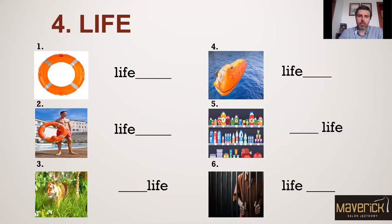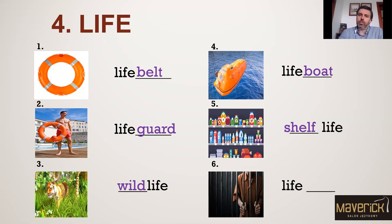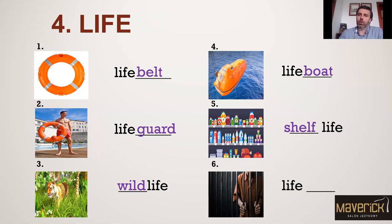Family four: life. Life belt — some people also call it a life donut. Lifeguard. Wildlife. Lifeboat. Shelf life — shelf life is actually the period of time before your food goes off or expires. So let's say milk has a two or three week shelf life, meaning you should consume it before the expiry date, and then it expires. Life sentence — when you commit a very serious crime, you are sentenced to life in prison, without a chance to be released.